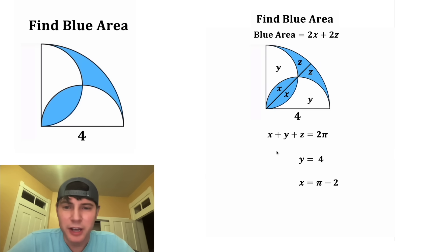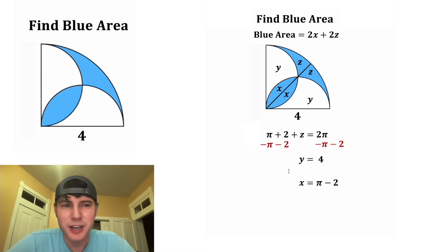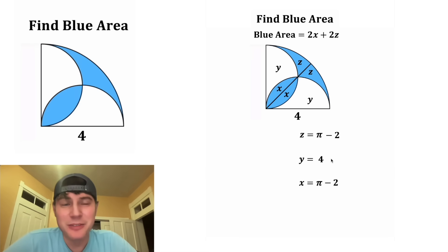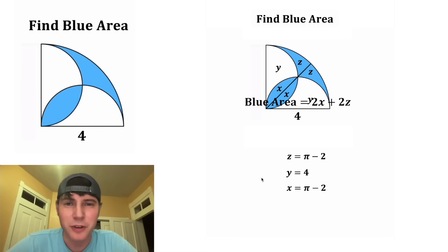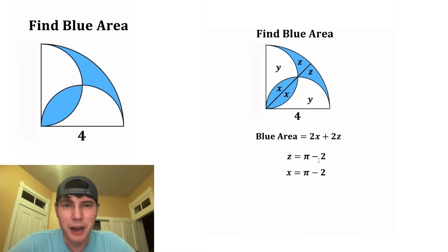Now we know x and y, so we're going to substitute that into this equation. In the place of x we'll plug in pi minus 2, and in the place of y we're going to plug in 4. Let's combine the negative 2 and the 4 to give us 2, and then we'll subtract pi minus 2 from both sides. On the left-hand side all of this cancels out, and on the right-hand side 2 pi minus pi is 1 pi. And now we have z is equal to pi minus 2. Notably, z and x are both equal to pi minus 2, so x is equal to z.